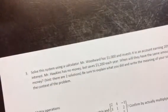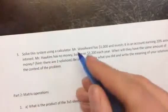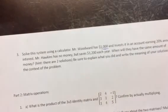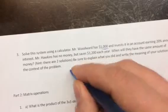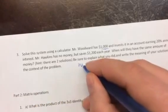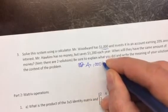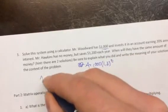If you look at the back, number three has a system of equations that has to be solved using a calculator. It says Mr. Woodward has a thousand dollars and invests it in an account earning 20% annual interest. So the equation for that is A = 1,000 times 1.2 to the t where A is amount of money and t is time in years.